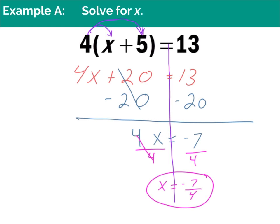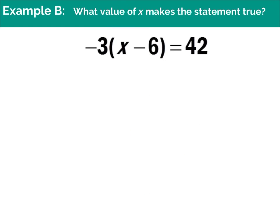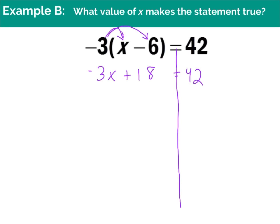In example B, I have -3(x - 6) = 42. I draw my wall down for the equal sign, then determine whether to combine like terms or use the distributive property. I don't have any terms to combine, so I'll distribute the negative 3. Negative 3 times x is negative 3x, and negative 3 times negative 6 is positive 18 — a negative times a negative is a positive. If you're not sure, use your calculator. Bring down 42 on the other side.